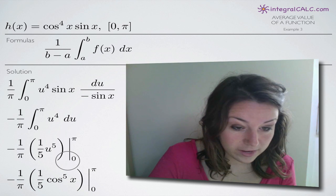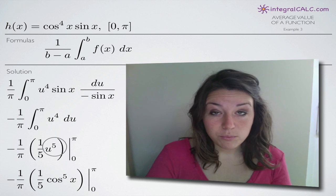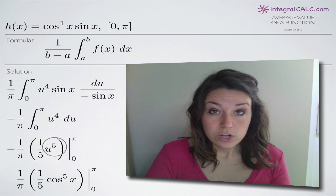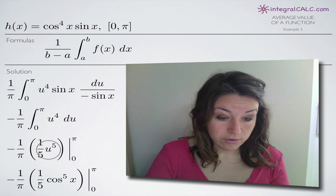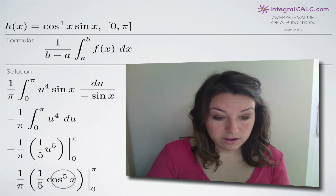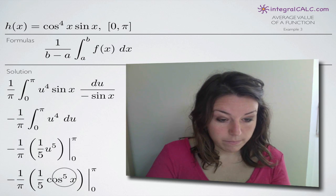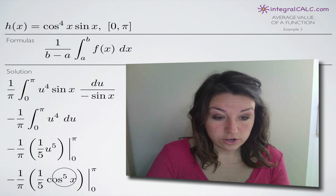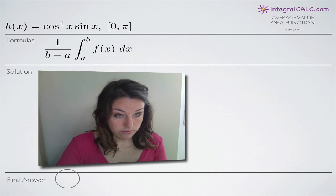Before we can evaluate, we have to plug back in for u. Since u equals cos of x, we plug cos of x back in for u, and we move the fifth power back in front of the x on the cosine, because that's the technically correct way to write it. Now we evaluate from zero to pi.